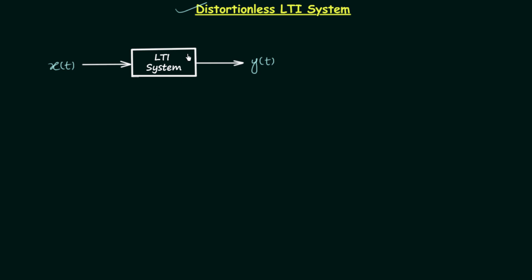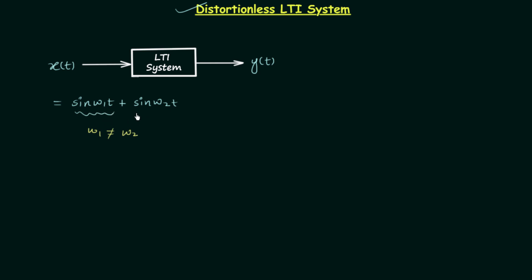In case number one we will consider the LTI system is having both types of distortions — magnitude distortion as well as phase distortion — and after this we will see the modifications required to make it a distortionless LTI system. Let's say input x(t) has two terms: the first term is sin(w1·t), where w1 is the frequency of the first term, and the second term is sin(w2·t). The two frequencies are different — w1 is not the same as w2. As this LTI system has both magnitude and phase distortions, the first term will have different amplification and different time delay compared to the second term, because we have two different frequencies.